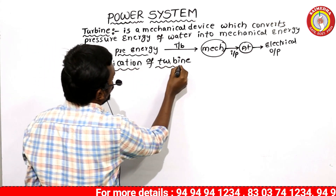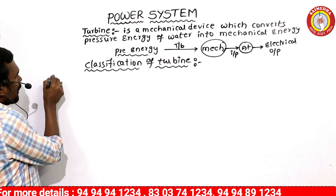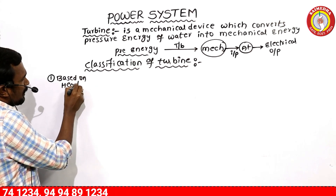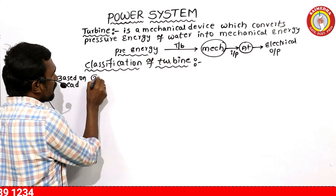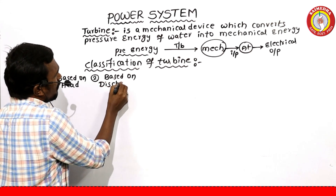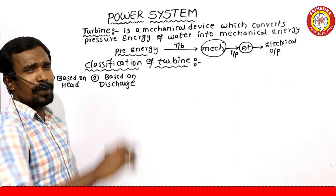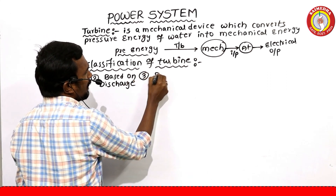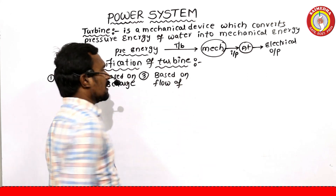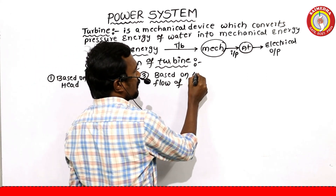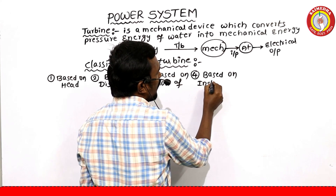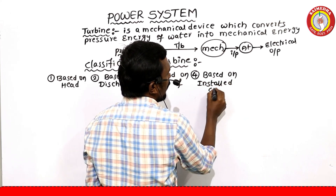We classify turbines based on: head, discharge of water, flow of water, and installed capacity.